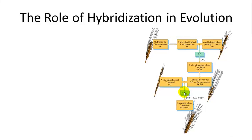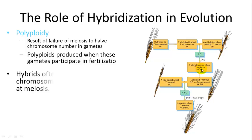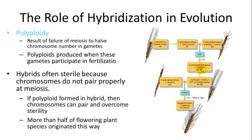One thing that can occur with hybridization is polyploidy — as discussed with wheat. A hybridization event that makes organisms infertile can be followed by a polyploidy event that restores their ability to reproduce. It is thought that more than half of all flowering plant species originated through some combination of hybridization and polyploidy.